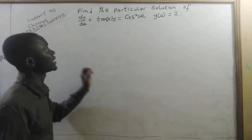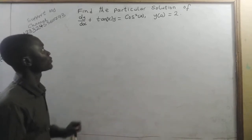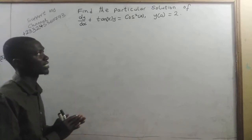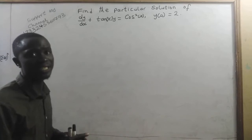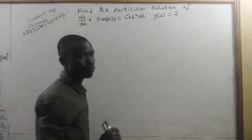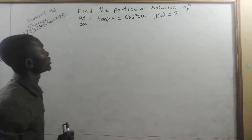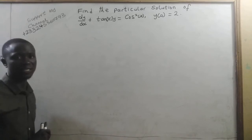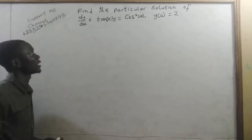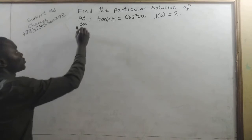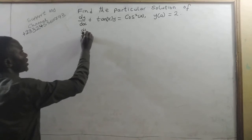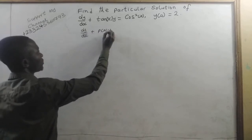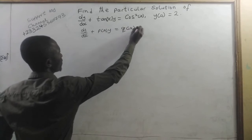In this lesson, we are going to find the particular solution of dy/dx plus tangent of x times y equal to cosine squared of x, and we have the initial condition y(0) equal to 2. Now, what form of equation is this? This is a differential equation. It is linear and it is first order. This equation is in the form dy/dx plus p(x) times y equal to q(x).